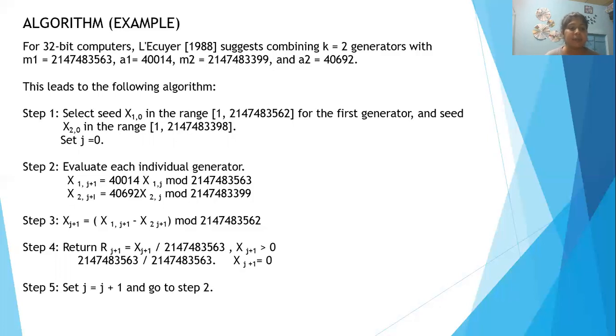Step 5 is to increment the j value and repeat from step 2. This is how the combined linear congruential algorithm works. Thank you.